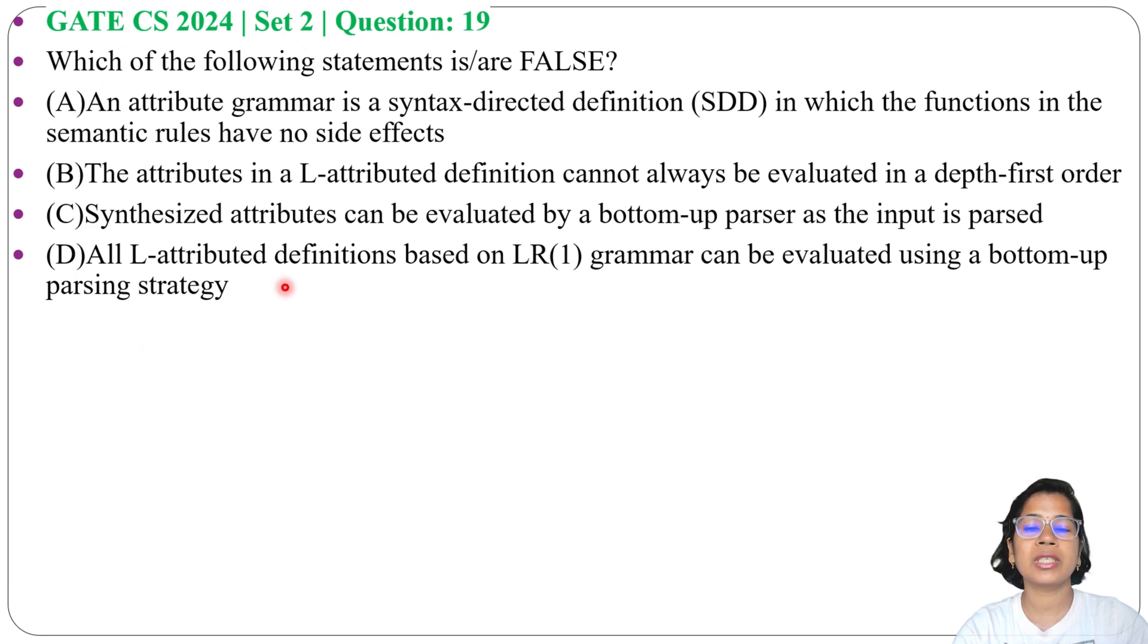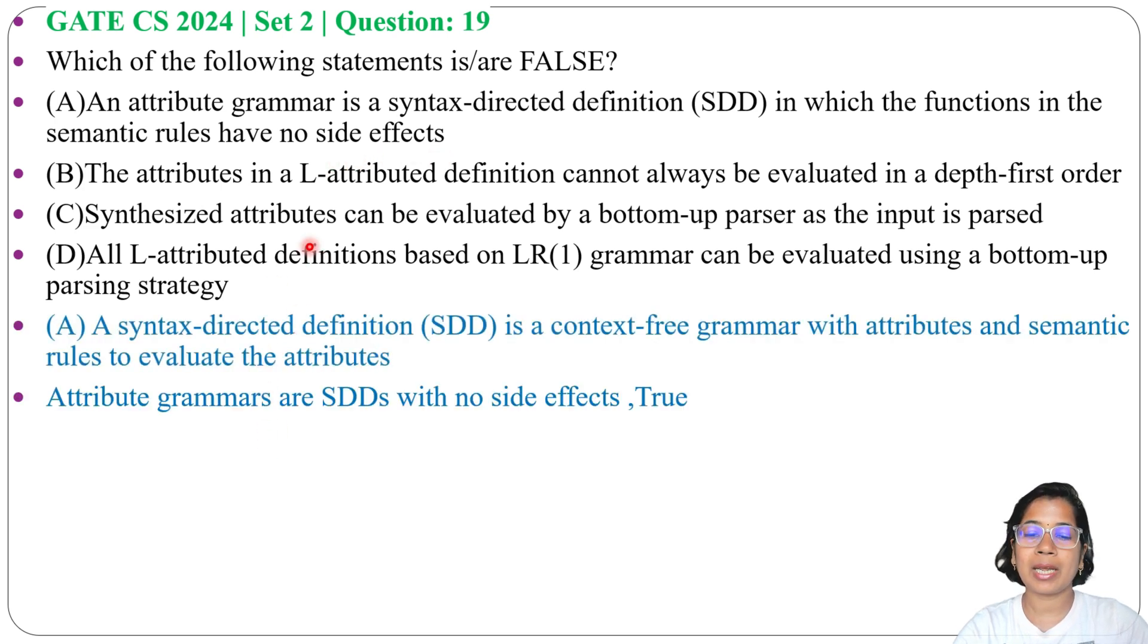Option A: An attribute grammar is a syntax-directed definition in which the functions in the semantic rules have no side effects. This is true. Attribute grammars are SDDs with no side effects.